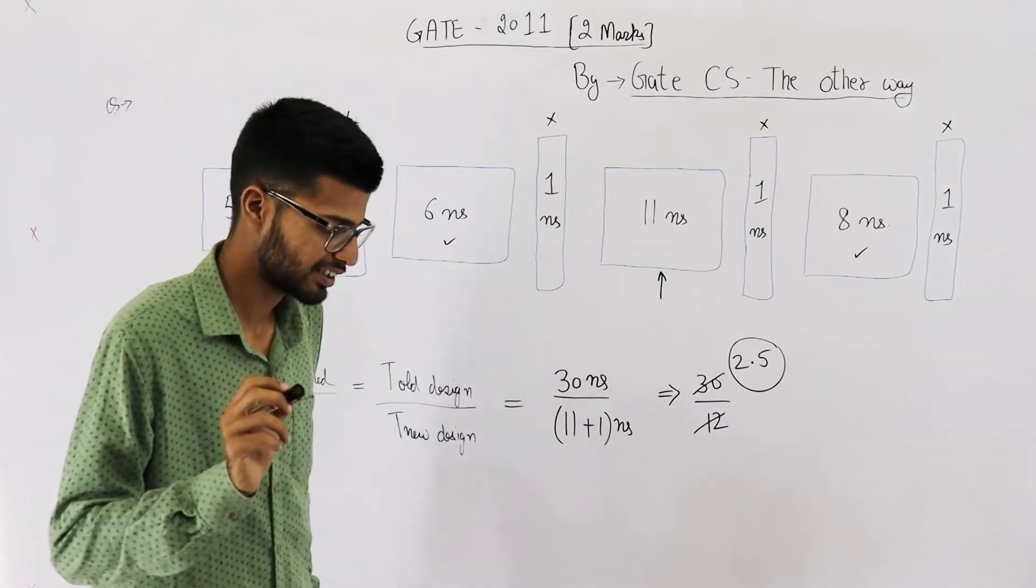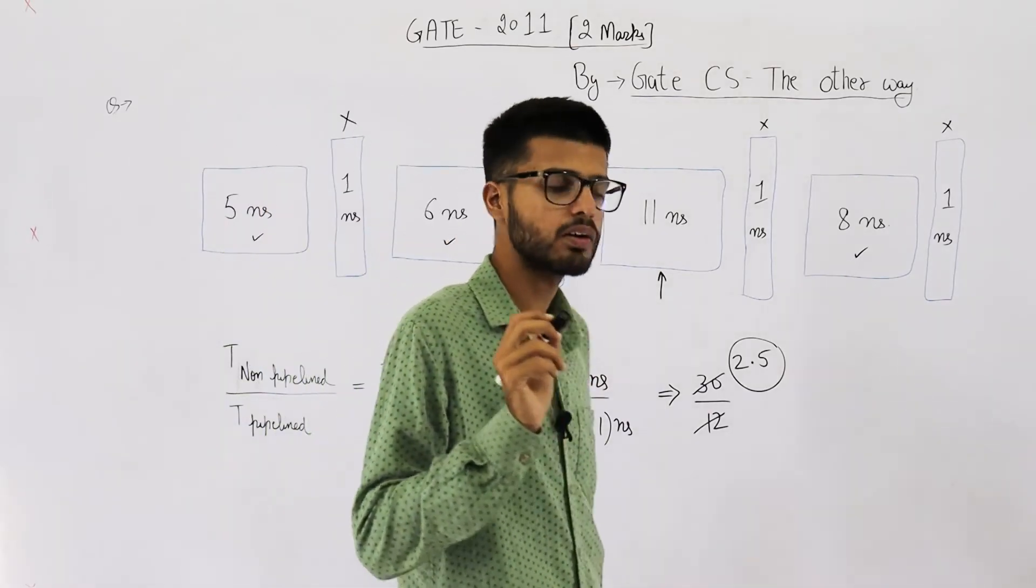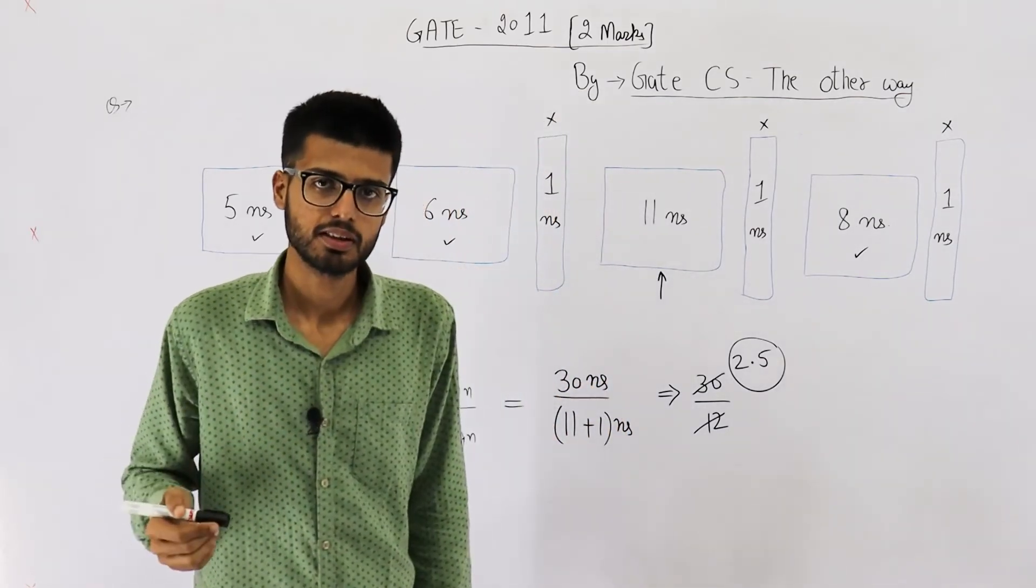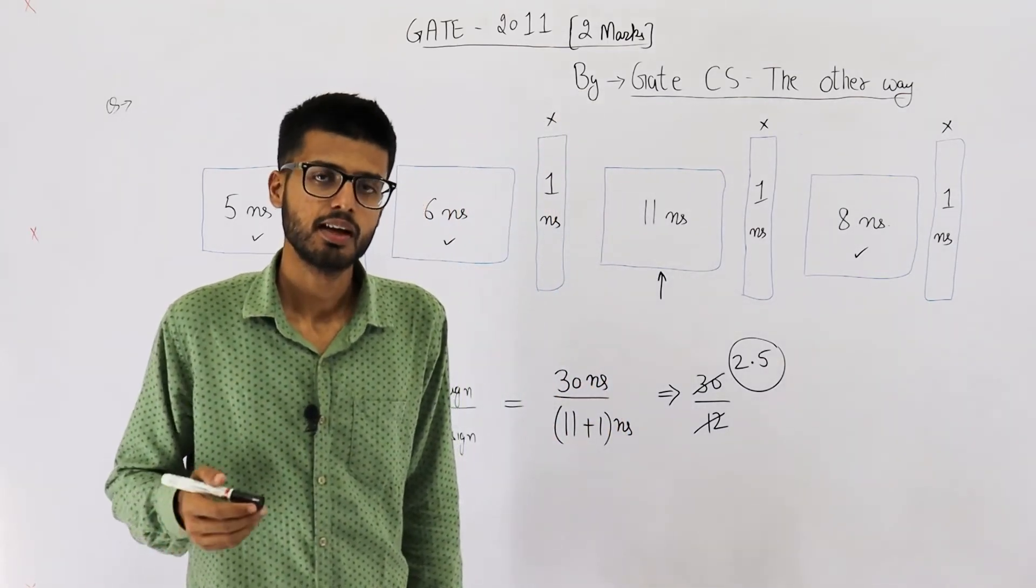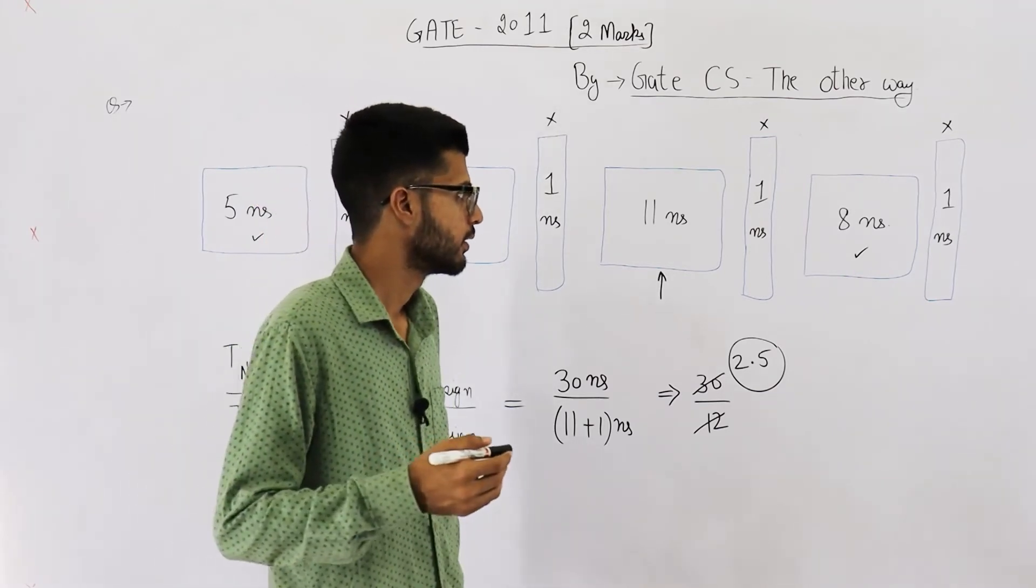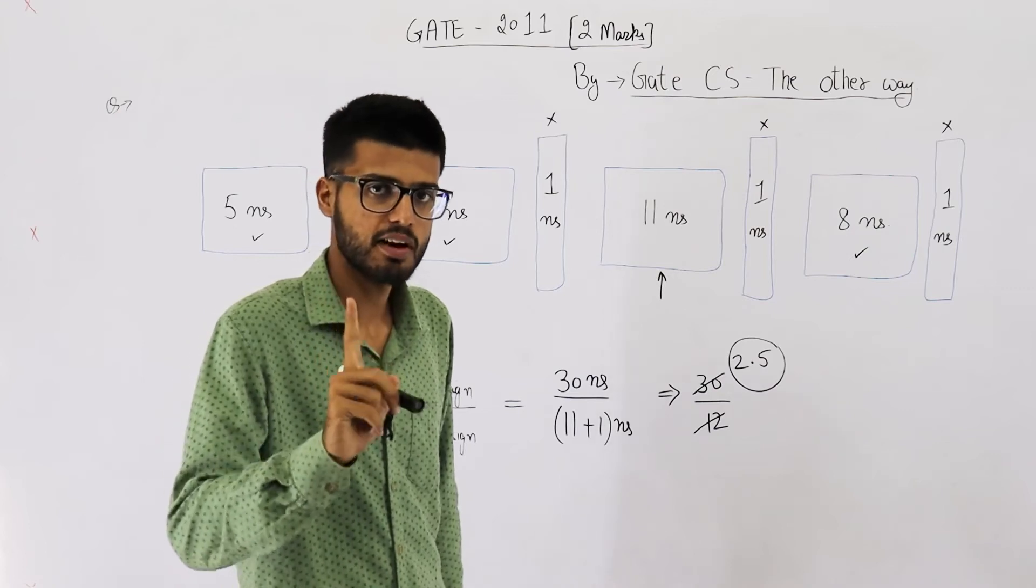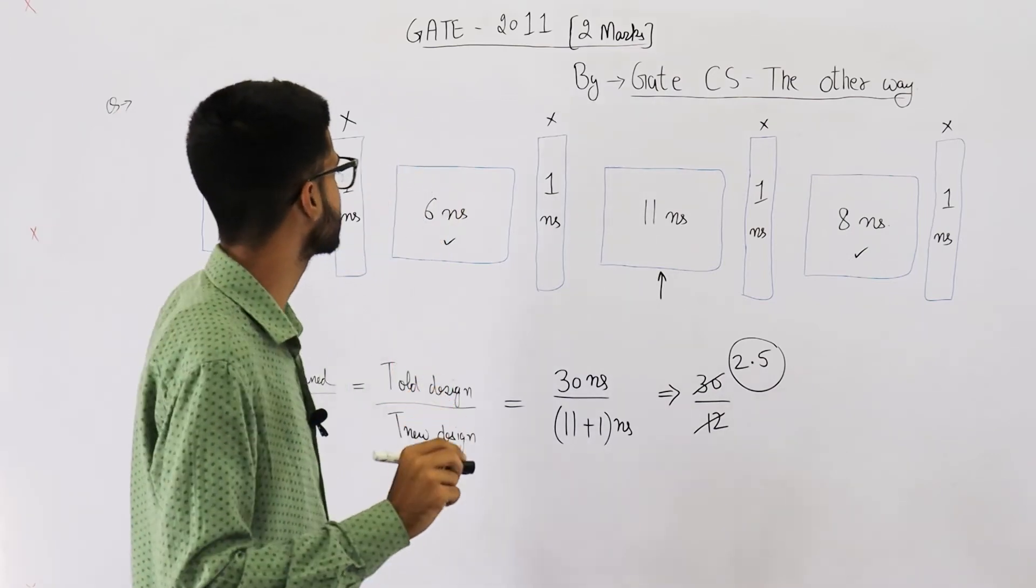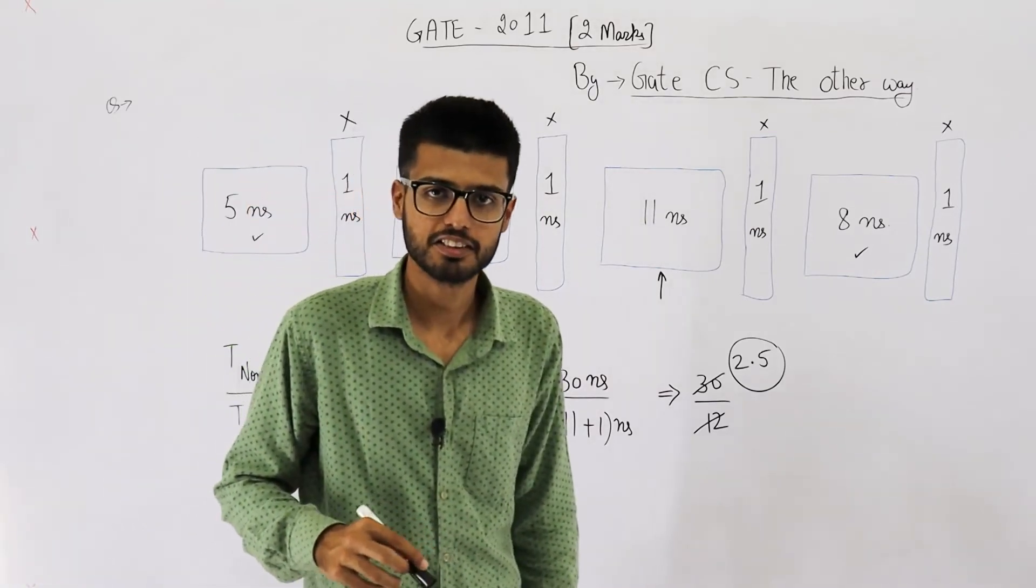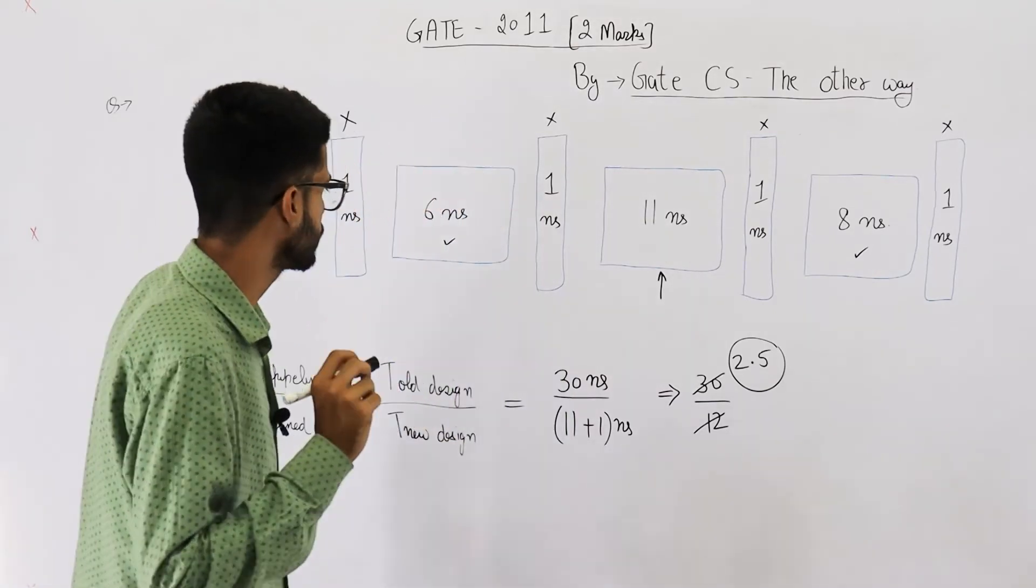That means for a very large program. And for a very large program, you can also assume average CPI is equal to 1. Because as we keep on increasing the number of instructions, average CPI keeps on coming closer to 1. For example, for only one instruction, the average CPI will be 4. Because it requires to pass through all 4 instructions.